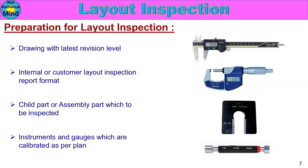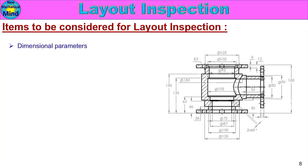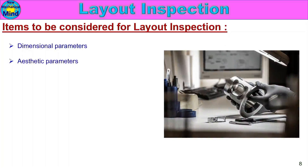Now, items to be considered for layout inspection. First, dimensional parameters — check all dimensions from the drawing. Second, aesthetic parameters — these are visual-related items, for example: rust, damage, scratch, surface texture, grain size, color, and color variation. Check all aesthetic parameters.